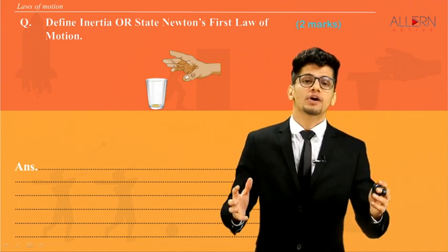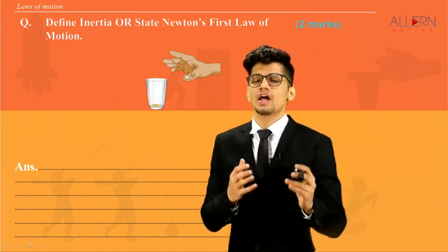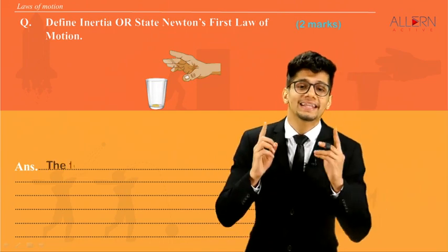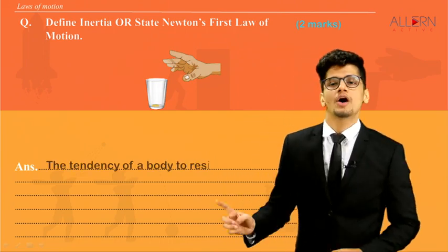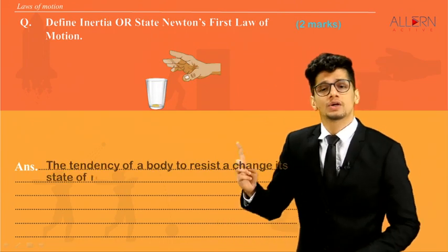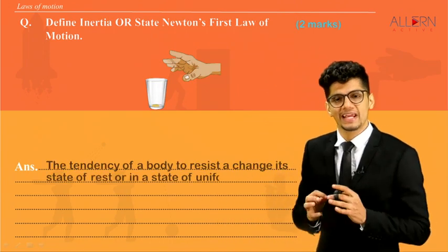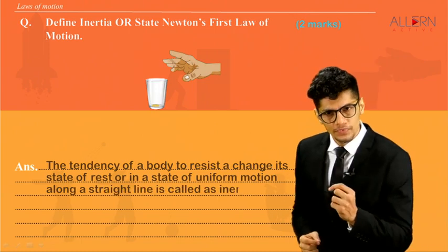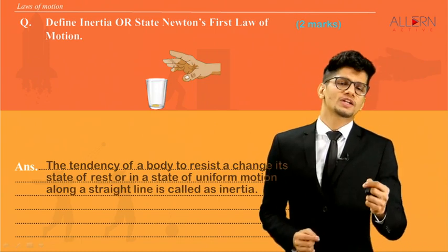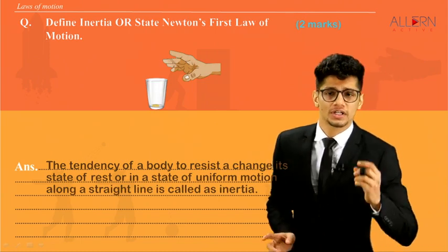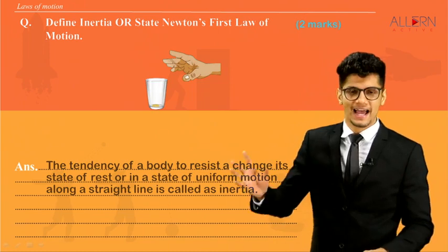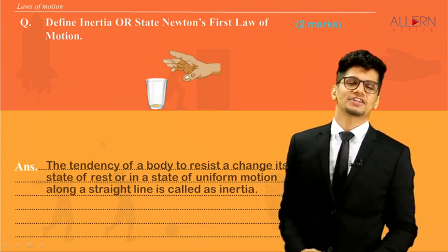A body which is at rest wants to remain at rest, and a body which is in motion wants to remain in motion. So the tendency of a body to resist a change in its state of rest or in the state of uniform motion along a straight line is what is called inertia.